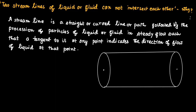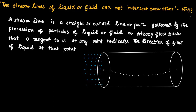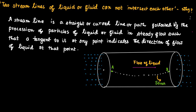This is a tube and liquid is flowing through this tube, and we can draw a streamline — this is the line along which the particles of liquid are flowing. This is the streamline, which is a curved line. Liquid is flowing towards the right and AB is the streamline.